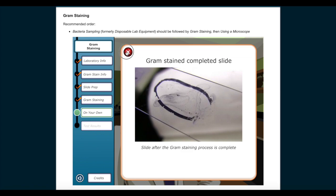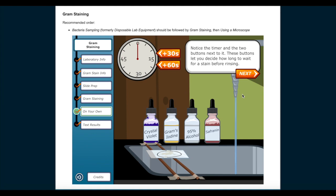Notice the timer and the two buttons next to it. These buttons let you decide how long to wait for a stain before rinsing. Remember, you can click the hint button at the bottom right for help. Click next and begin gram staining on your own.